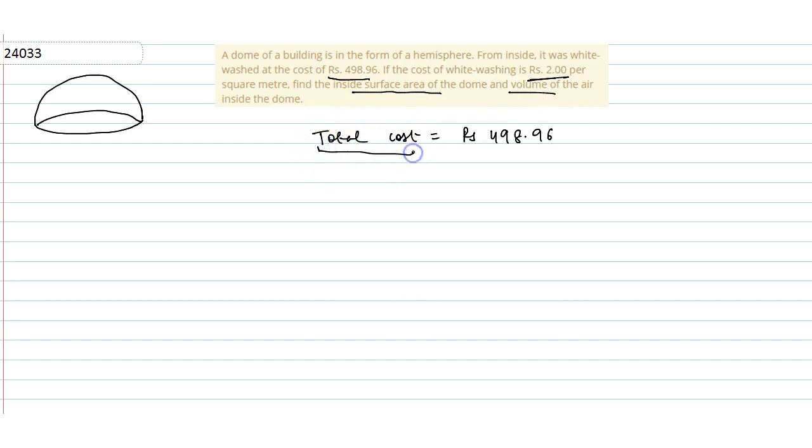Total cost - the cost is for the inside whitewash. So when you have to find the inside surface area, it will cover the entire hemisphere.